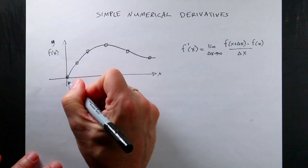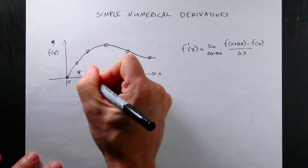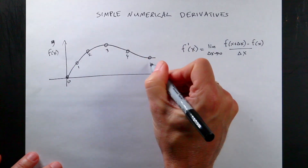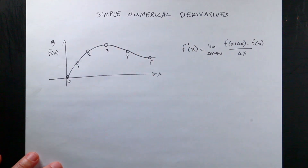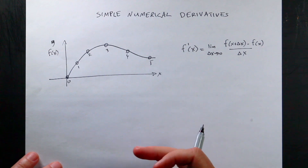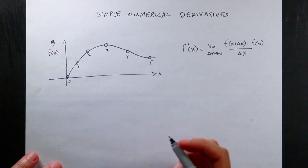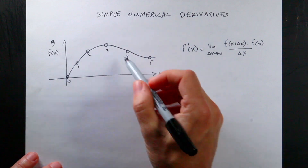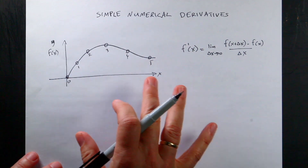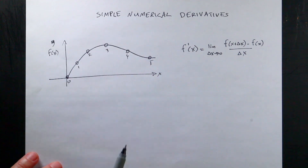Let's call these data points 0, 1, 2, 3, 4, 5. I can't do a calculus derivative of a function if I don't actually have a function. You could fit a function to this and take the derivative of the function, but I want to take the derivative of the data.